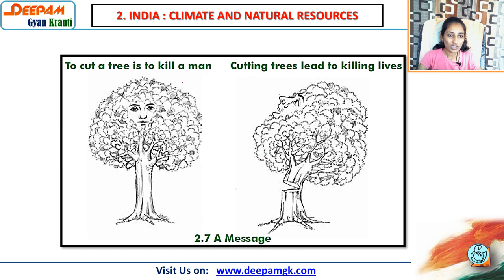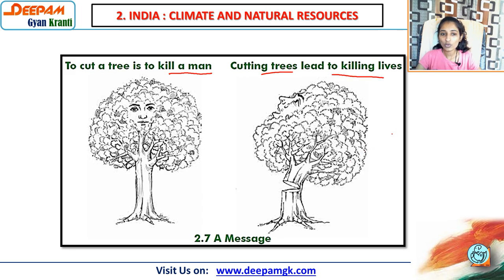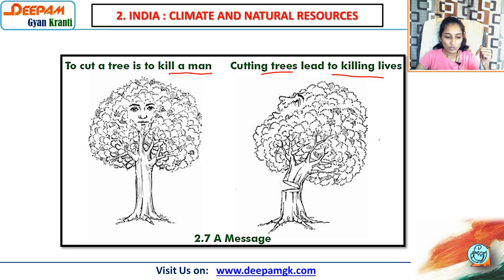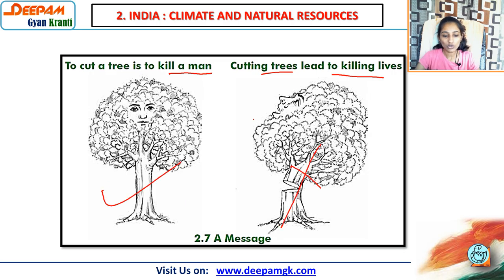Here is an important message: to cut a tree is to kill a man, and cutting trees leads to killing lives. Day by day we are cutting trees to satisfy our needs, to create row houses and all that. That is why we are facing problems like too much heat, less rainfall, too much cold, and the greenhouse effect. We are responsible for that. So don't cut trees — grow more trees.